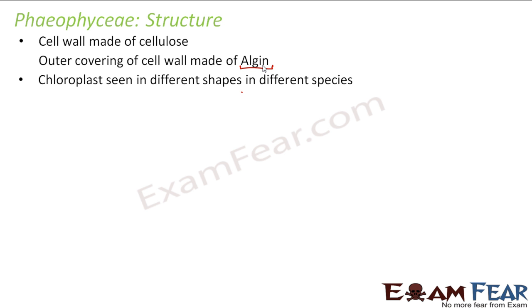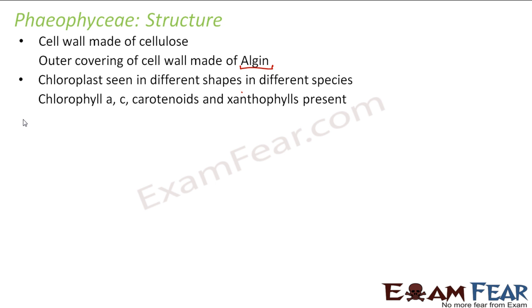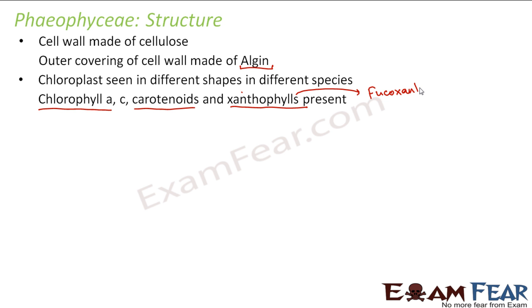Chloroplast is seen in different shapes in different species. The pigments present in Phaeophyceae are Chlorophyll A, C, carotenoids, and xanthophylls. Due to the presence of all these pigments, they are generally brown in color. Their brown color is specifically because of the carotenoids and xanthophylls, and within xanthophylls there is a special pigment known as fucoxanthin which gives it a brown color.